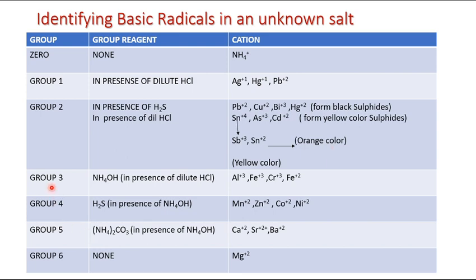The Group 3 reagent is ammonium hydroxide, and it again works in the presence of HCl. In this group we have ions: Al3+, Fe3+, Cr3+, and Fe2+.